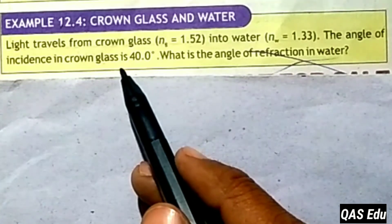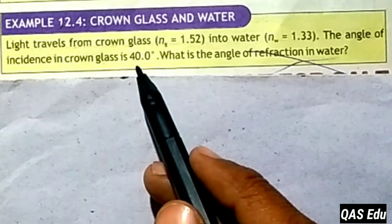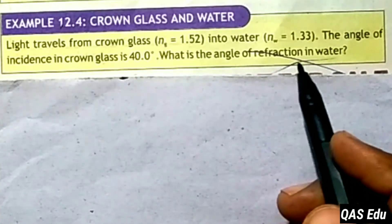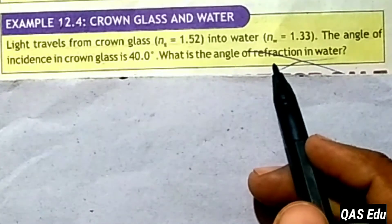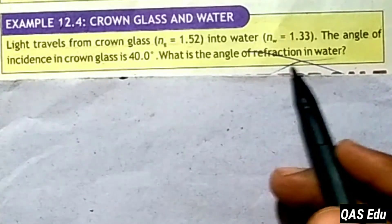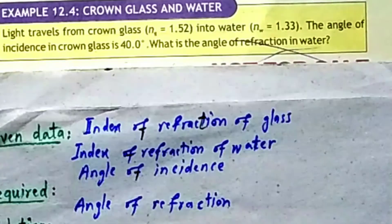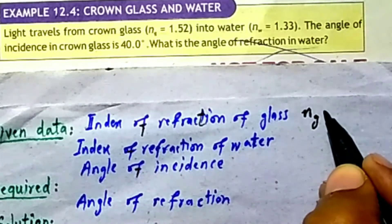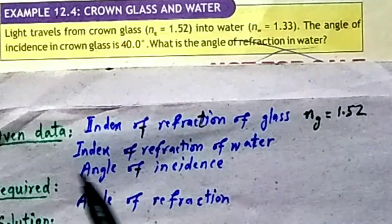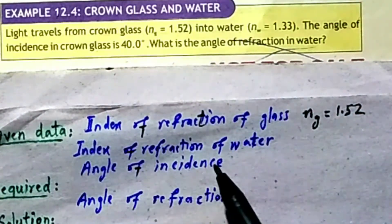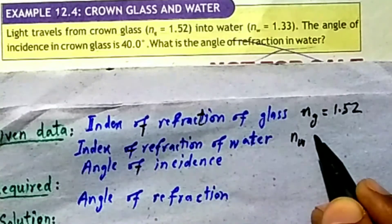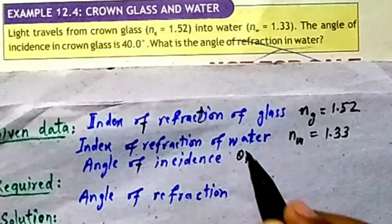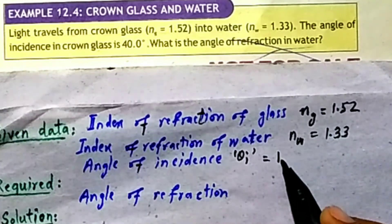The light goes from glass into water. Relative to the normal, we find the angle. What is the angle of refraction in water? The given data: refractive index of glass NG ≈ 1.52, refractive index of water NW ≈ 1.33, angle of incidence theta_i = 40 degrees.